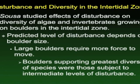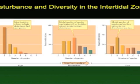Salsa did a study on the effect of disturbance in the intertidal zone, looking at algae and invertebrates growing on boulders of different sizes to simulate different levels of disturbance. Large boulders were rarely disturbed because it took very large storms to move them, intermediate-sized boulders were disturbed at an intermediate rate, and smaller boulders at a much more frequent rate. By counting the different species of algae and macroinvertebrates on these boulders, he found that the medium-sized boulders had the greatest species diversity.